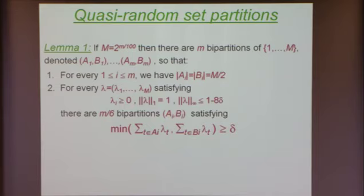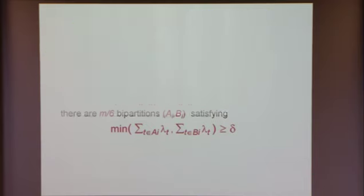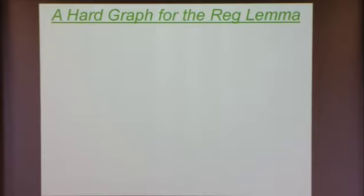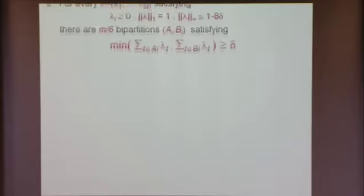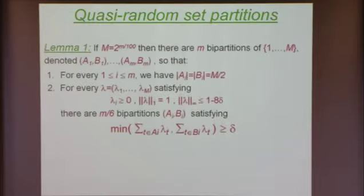The important thing is that this should happen for every vector lambda. We take this lemma as a fact. The construction is to take random partitions, show they are more or less balanced with high probability, and then show that once balanced, they satisfy this condition.